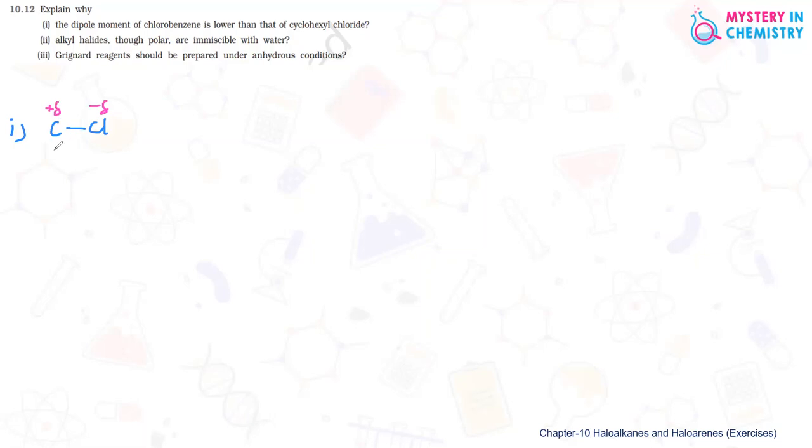Dipole moment is always represented by this arrow towards more negative, and this is the distance between these. So dipole moment, which is represented by mu, is actually equal to the charge which is separated, that magnitude of charge, times the distance by which it is separated. This multiplication will indicate how much is the dipole moment.